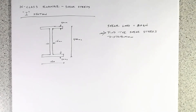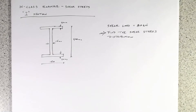Welcome back. This is our third example of shear stresses over three different types of cross-section members on beams. In our first example, we looked at a pure rectangular section with transverse load. In the second example, we had a T-beam with flanges on the bottom, and now we're going to look at an I-section.